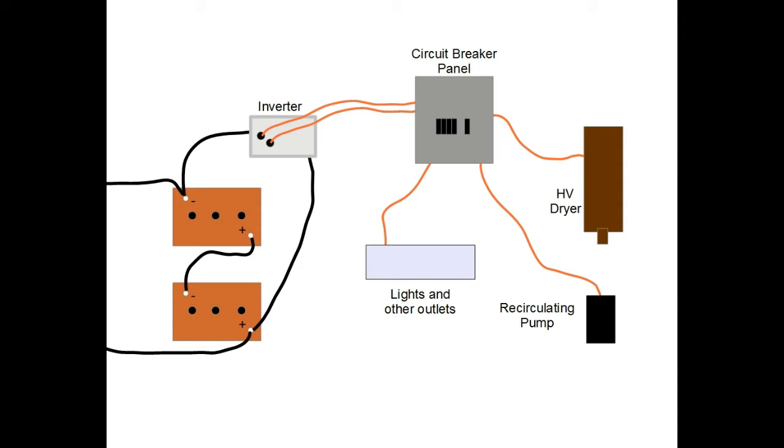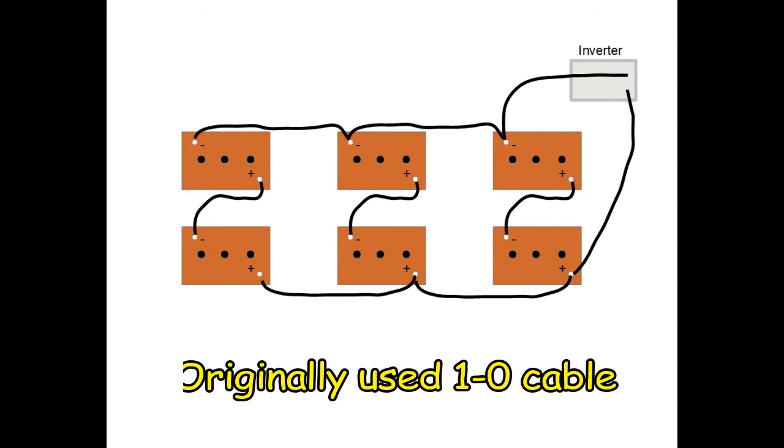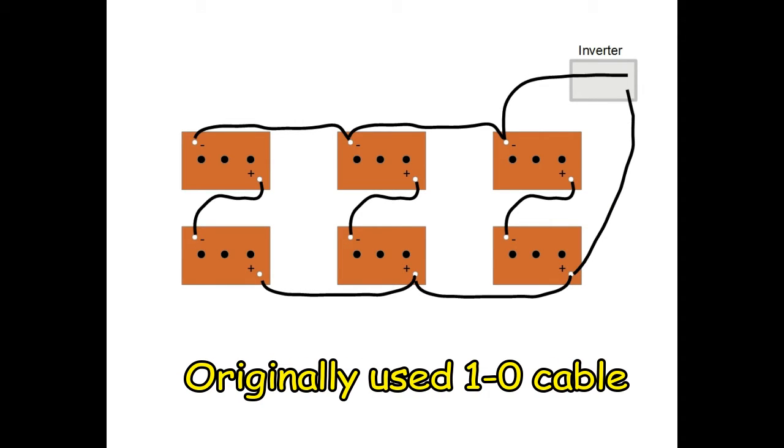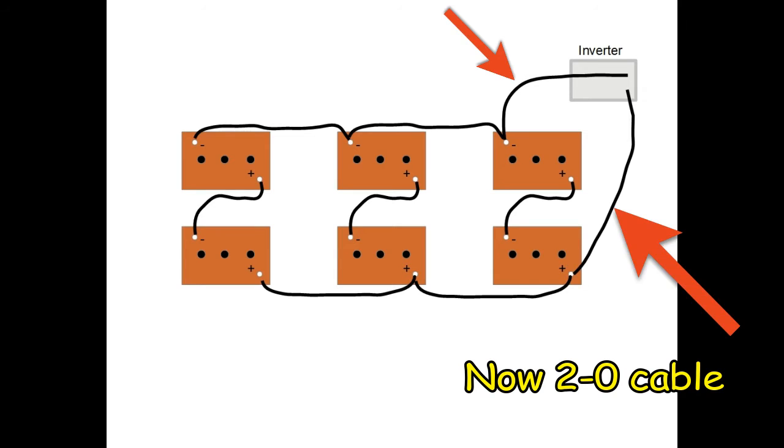Of these, the HV dryer uses the most power. The HV dryer helped to identify the weak points in the system. While the recommendations of several websites said that one-aught cable would handle the load of 3000 watts, I found that I needed to double this to get enough power to the inverter from the batteries.